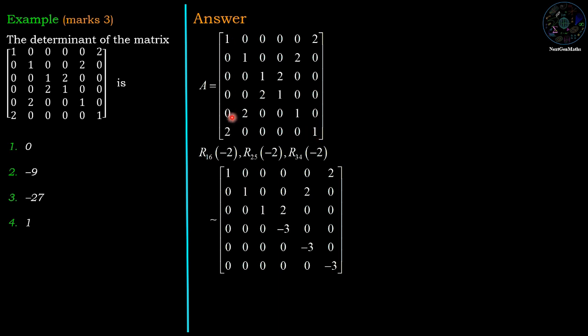Then minus 2 plus 2 cancels, so we have 0, and minus 4 plus 1 we have minus 3. Now for the second row operation, second row is multiplied by minus 2 added to the fifth row. So minus 2 plus 2 plus 2 is 0, and minus 4 plus 1 is minus 3.